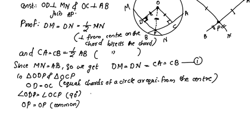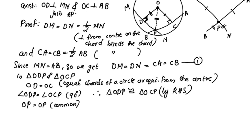By RHS congruence, the two triangles are congruent. Therefore, DP is equal to CP by CPCT.